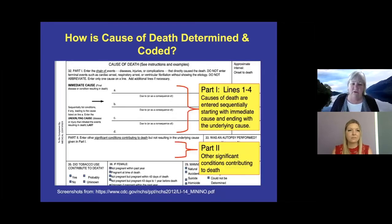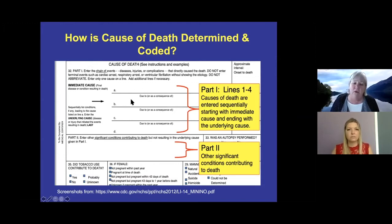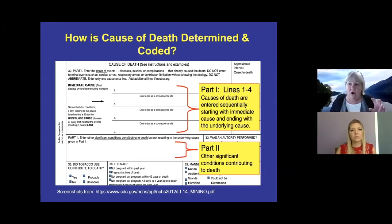This is what a death certificate looks like. At the top we have what's called Part 1, and this is sequential — you have the immediate cause of death on the very top line, then what caused that situation, and you keep going down. The lowest entry on this list is going to be the underlying cause of death, and that's the one considered when you're looking at cause of mortality. Part 2 contains other information that may have contributed to the death but wasn't part of that sequential event.